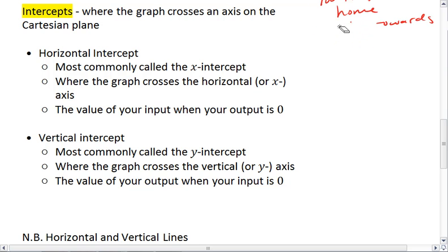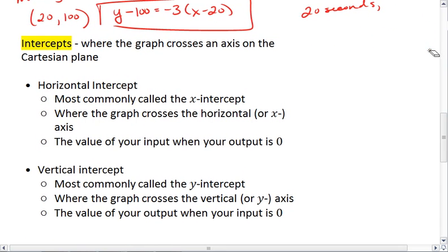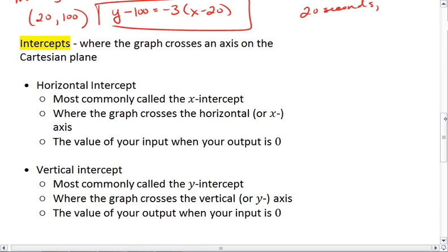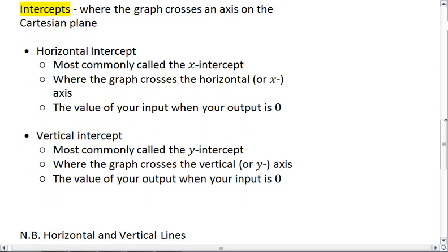We have two types of intercepts because we have two axes. We have our horizontal axis, which gives us a horizontal intercept, and our vertical axis, which gives us our vertical intercept.